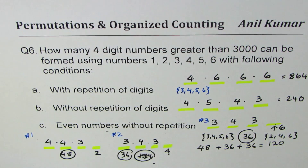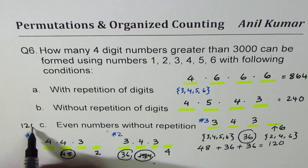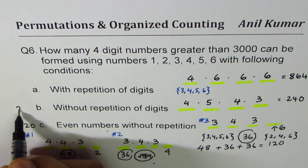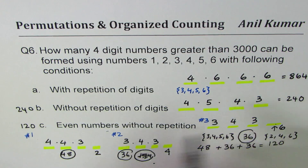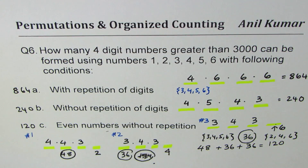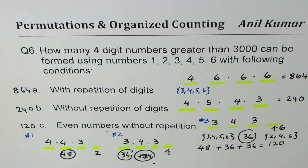So there are 120 combinations for part c, 240 for part b, and 864 for part a. I hope this shows how when conditions change we can count the number of possibilities using organized counting. I'm Anil Kumar — if you like my videos please like, share, and subscribe. Thank you and all the best.